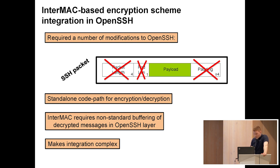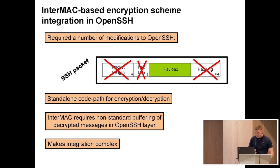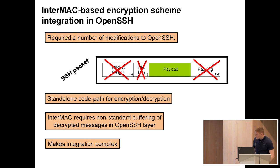We also implemented a standalone code path for InterMAC encryption and decryption. This circumvents some bad history in the OpenSSH codebase, and we also needed it because InterMAC is really different from some other encryption schemes that OpenSSH supports. For that same reason, we had to implement some non-standard buffering of the output from the InterMAC decryption algorithm. This shows that if you want to integrate InterMAC into your application, it can become quite complex.